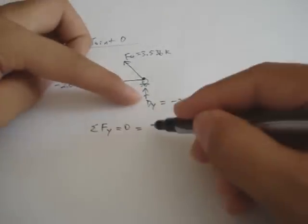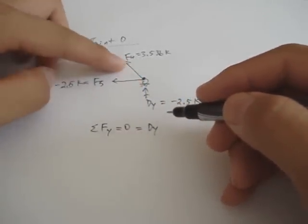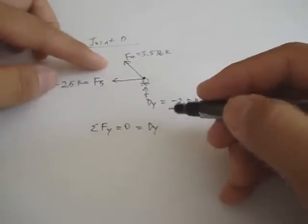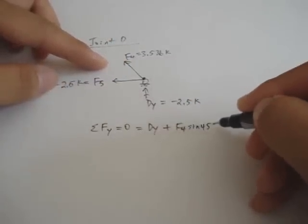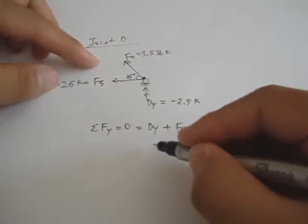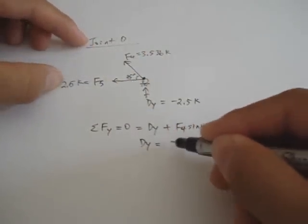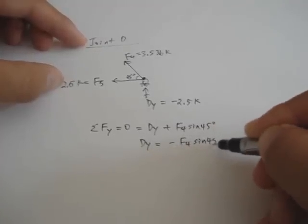So, you get that DY going up. And then you have the y component of F4 going up. So, plus F4 sine of 45 degrees. And that means DY is equal to minus F4 sine of 45 degrees.